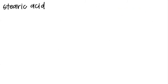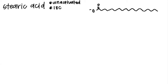Our next example is stearic acid. Because CoA is not in the name like the last example, we know this fat is unactivated — we'll come back to this later. Stearic acid has 18 carbons. Like last time, we start from the end and count every two carbons, making a cut. Each yellow dot is an acetyl-CoA, so we have nine acetyl-CoA, and each dotted line is a cut, giving us eight cuts.